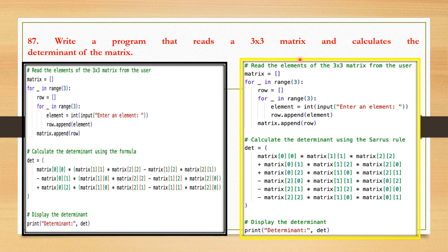The next program reads a 3x3 matrix and calculates its determinant, showing two solutions. In the first approach, elements of the 3x3 matrix are read from the user, stored in a matrix list, and the determinant formula is applied to calculate the value stored in a det variable, which is then displayed. The second approach uses Sarrus' rule: elements are read and stored in a matrix, then the determinant is calculated by multiplying and adding or subtracting certain elements based on their positions, and the result is displayed.